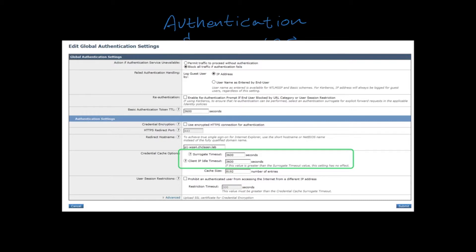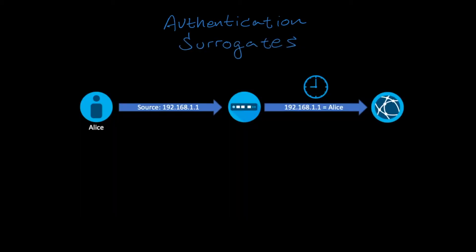The first authentication surrogate available in the WSA is IP Address. This is the default surrogate and it is the one that is most effective for limiting authentication events. Once a user completes authentication, the user's identity is associated with the Source IP Address and this will be used to make policy decisions for the duration of the surrogate timeout.